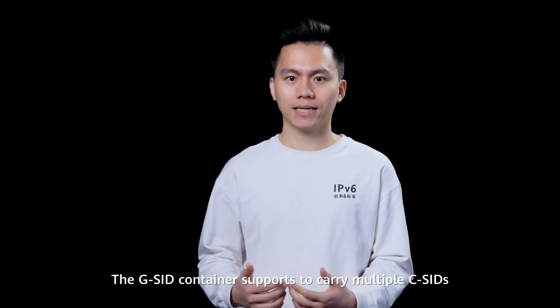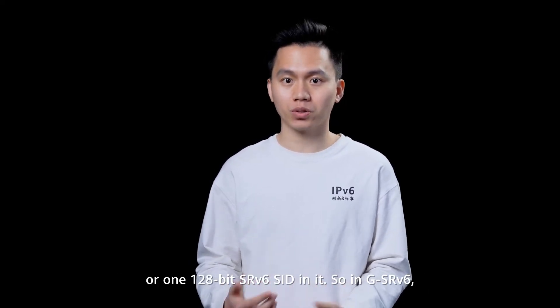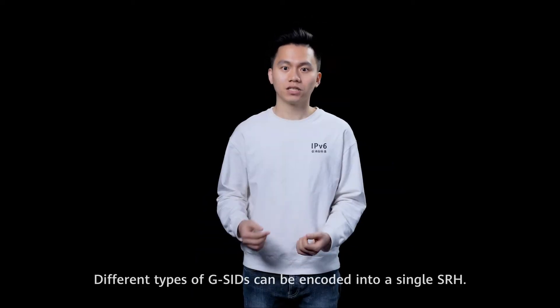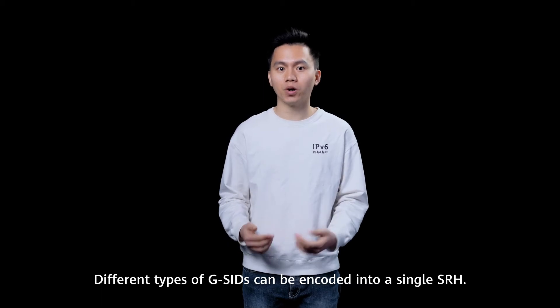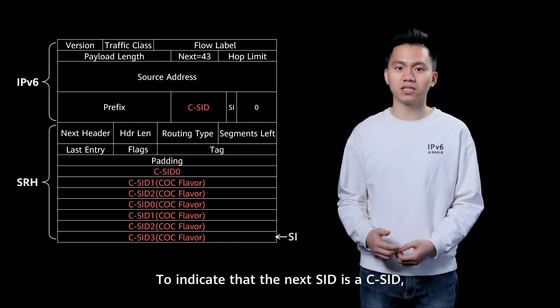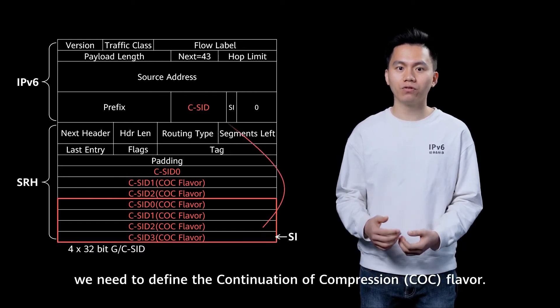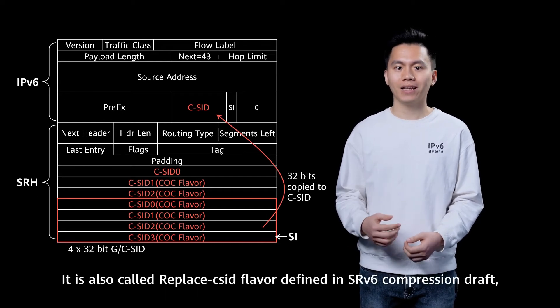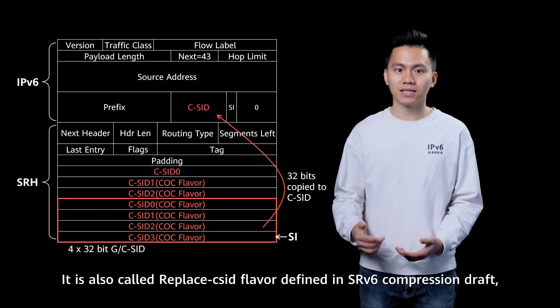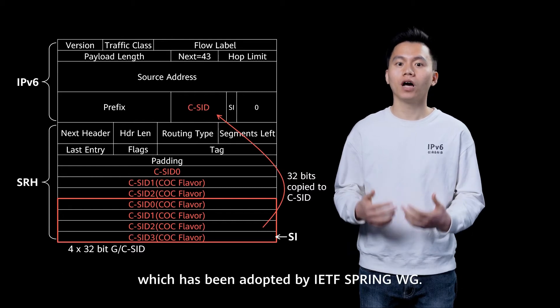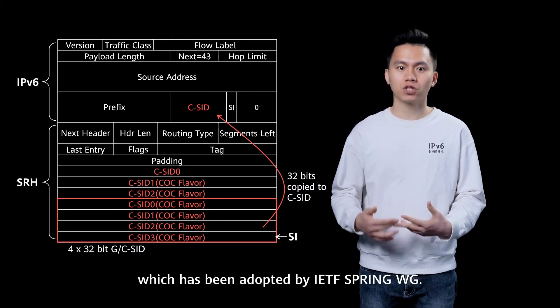The G-SID container supports carrying multiple C-SIDs, or one single 128-bit SRV6 SID in it. In GSRV6, different types of G-SID can be encoded into a single SRH. To indicate that the next SID is a C-SID, we need to define a new flavor, called the Continuation of Compression flavor, also called the Replace C-SID flavor, defined in the SRV6 compression draft, which has been adopted by the IETF Spring Working Group.